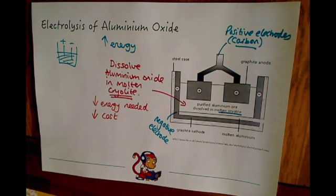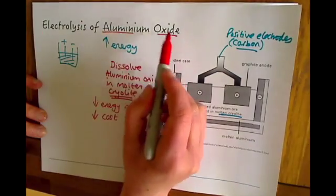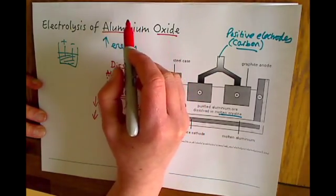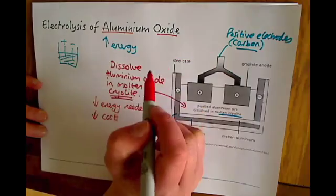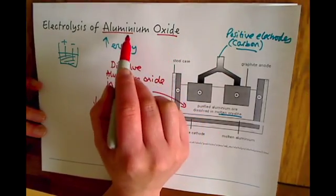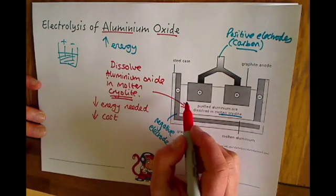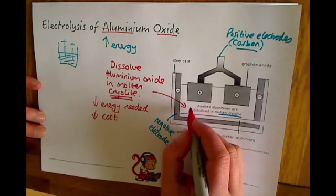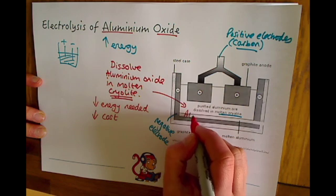If you're thinking about where the aluminium is going to go and where the oxygen is going to collect, remember that this is an ionic substance with a metal and a non-metal. Metals always form positive ions and non-metals generally form negative ions. So aluminium here is going to be positive, which means it's attracted to the negative electrode.